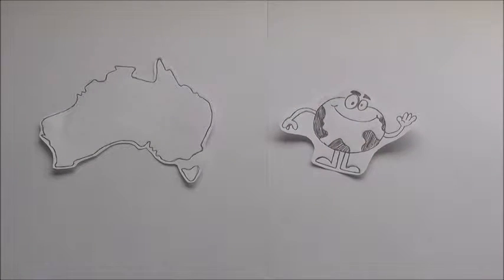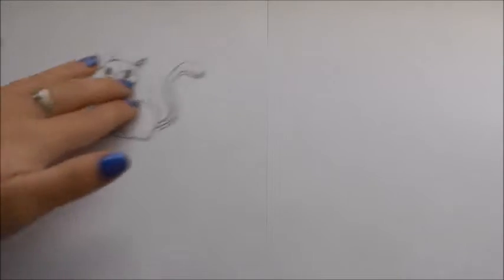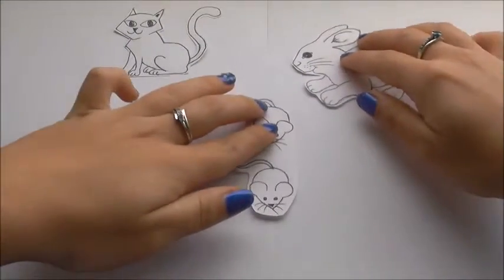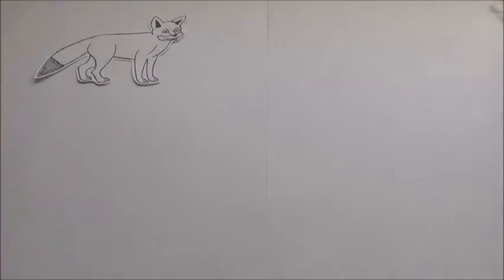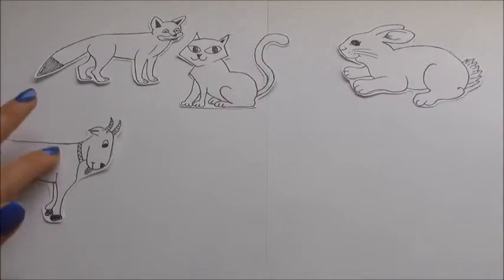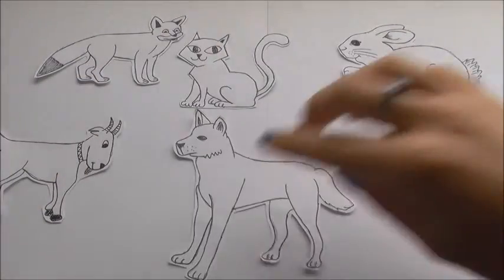Many introduced species in Australia were originally introduced as it was suspected that they could help with a broad range of environmental issues, such as wild cats being introduced to control the rabbit and mice problem. These introduced species include foxes, rabbits, cats, goats, dingoes and cane toads.